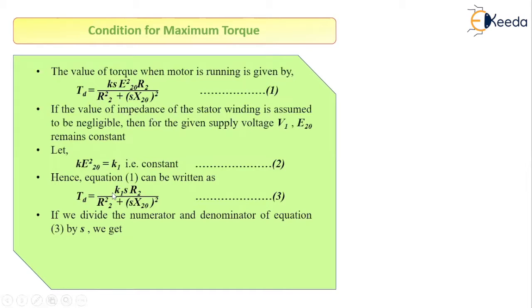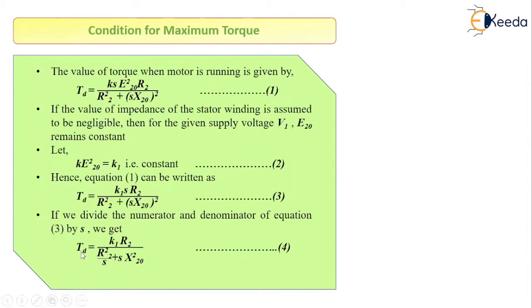Now we want to eliminate slip from the numerator, so let us divide both numerator and denominator by slip S. We get TD = K1·R2 divided by (R2²/S + S·X20²). Let this be equation number 4.